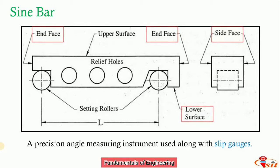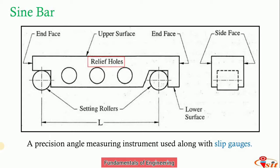All end faces, side faces, and lower faces are square and parallel to each other, which is very important for angle measurement. Relief holes are also provided in the sine bar to reduce its weight and to allow it to be held very accurately.